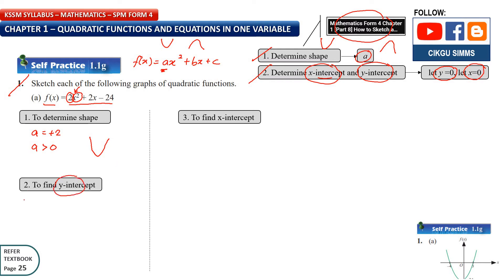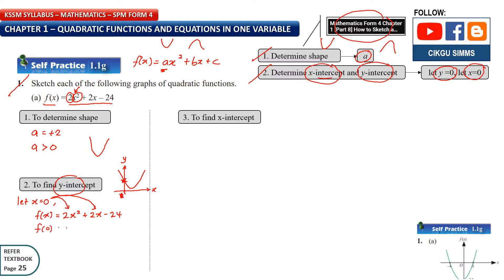Then you need to find the y-intercept. To find the y-intercept, you let x equal to zero. Substitute x with 0 into the equation: f(0) = 2(0)² + 2(0) - 24. So when x is zero, f(x) will be negative 24. Your y-intercept is (0, -24).